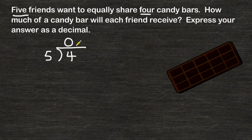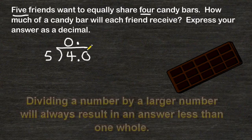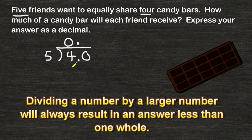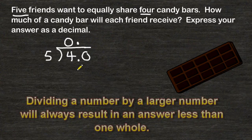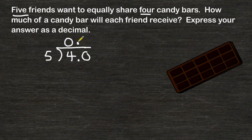So what we proceed to do at this point is add a decimal at the end of four, move a decimal directly above, and write a zero in the tenths place. Now we pretend that 4.0 is 40, and we divide five into 40, which can be divided exactly eight times. Eight groups of five is 40, and we can see that we have nothing remaining.